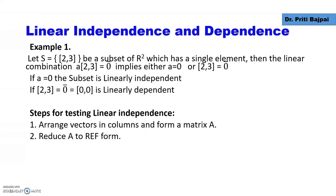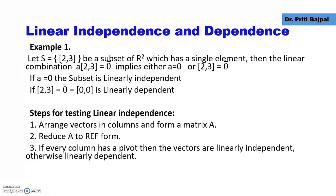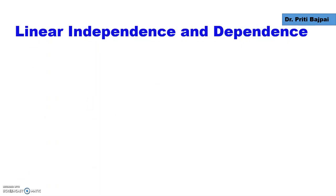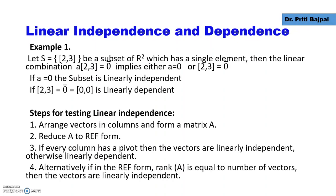To test whether a subset is linearly independent or dependent, we first arrange all the vectors as columns and form a matrix A. Then we reduce matrix A to row echelon form. If every column has a pivot, the vectors are linearly independent; otherwise they are dependent. Alternatively, if the rank of A equals the number of vectors, the vectors are linearly independent.